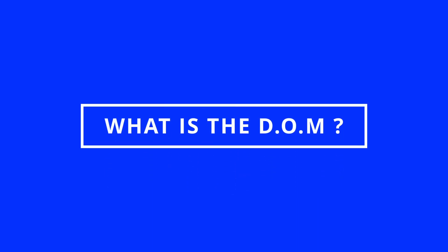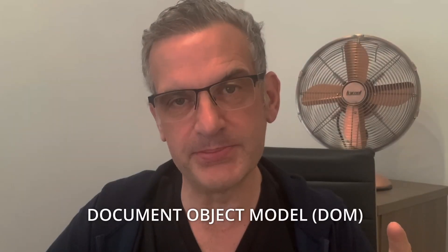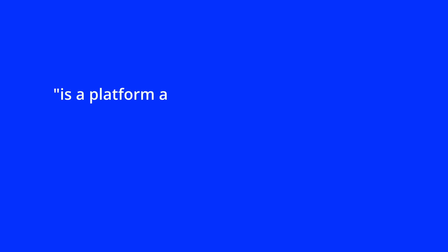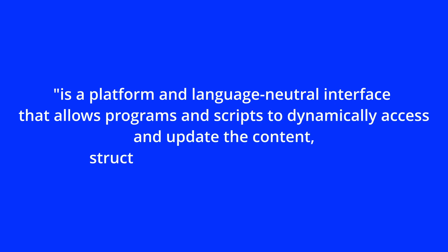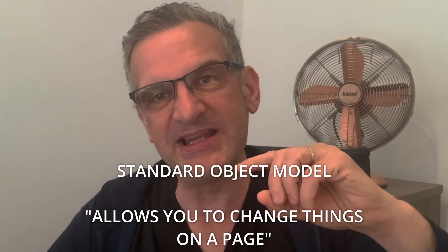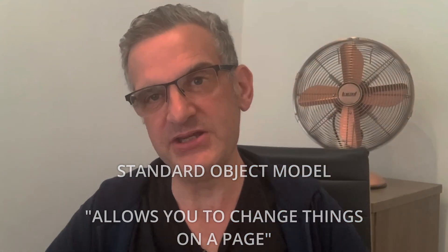Now to do this, React needs to manipulate what's called the DOM. So that leads to the next question: what is the DOM? Well, DOM stands for Document Object Model. So according to W3C or the World Wide Web Consortium, the DOM is defined as a platform and language-neutral interface that allows programs and scripts to dynamically access and update the content, structure, and style of a document. So in plain English, the HTML DOM is a standard object model and programming interface for HTML. It allows you to change things on the page that you're rendering.